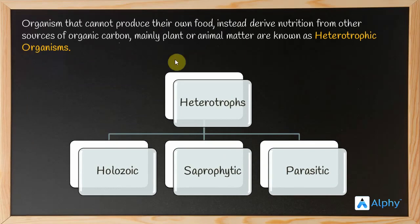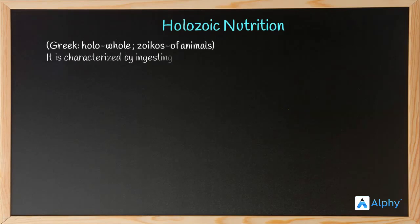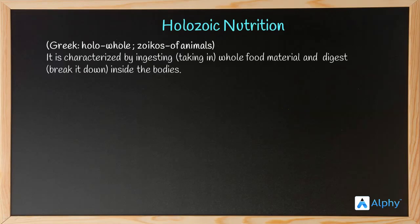Based on the type of food and the digestive apparatus, these heterotrophs have been classified into three types: holozoic, saprophytic, and parasitic mode of nutrition. The first is holozoic nutrition. The word holozoic is derived from the Greek word 'holo' meaning whole and 'zoicos' meaning animals. It is characterized by ingesting whole food material and digesting it inside the body.